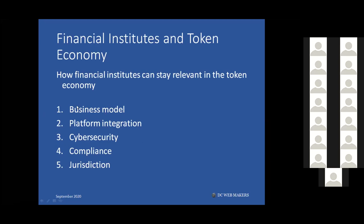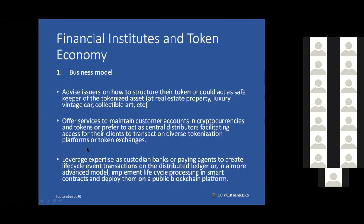The five elements are: business model — what type of asset you want to liquidate and on what terms and conditions; platform — what platform you want to use for the operational part; cyber security; compliance; and jurisdictions. You can come back to this slide and read it in detail — I'll briefly review each one now.